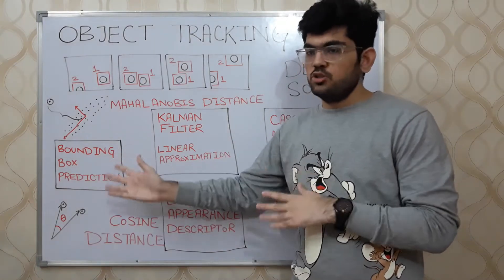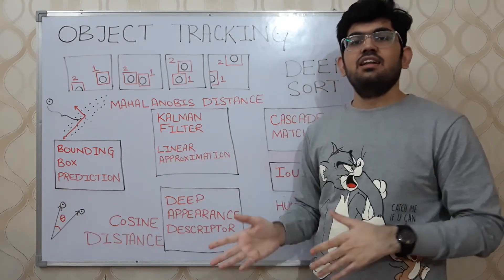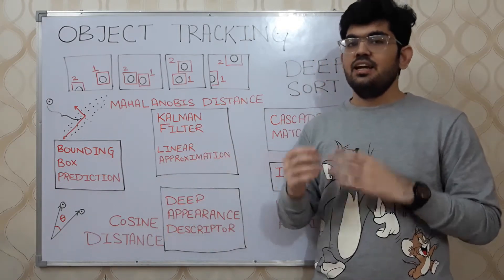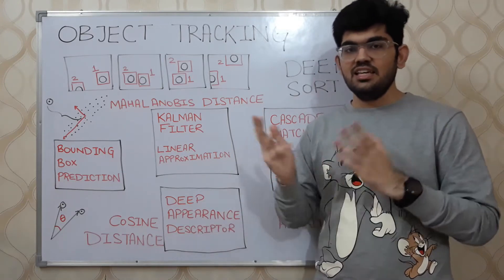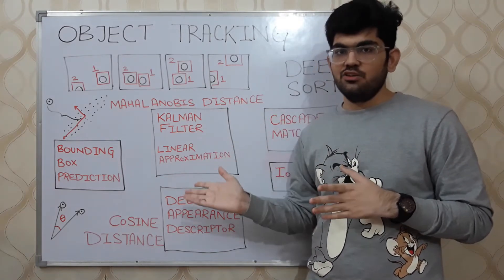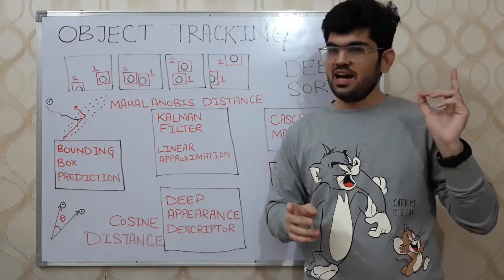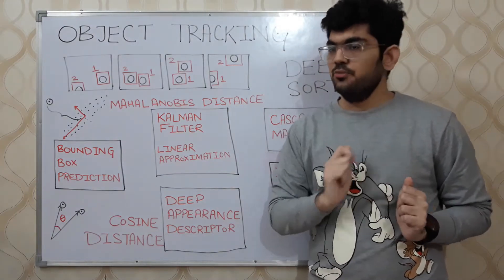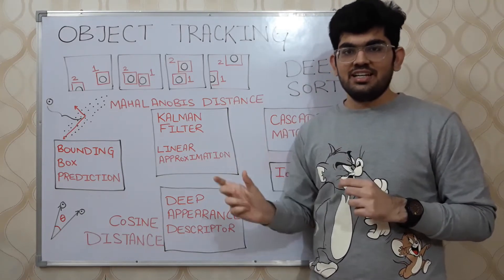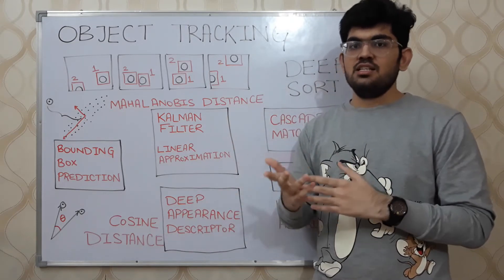The first step in this algorithm is to generate bounding boxes — detect where the objects are present in the image. This can be accomplished using any CNN architecture: it can be YOLO, R-CNN, or even a simple computer vision handcrafted model. For our project, we have used the YOLO v3 algorithm, which is already explained in another video. Briefly, given an input image, YOLO v3 detects all the objects present, draws a bounding box around them, and tells us what each object is.